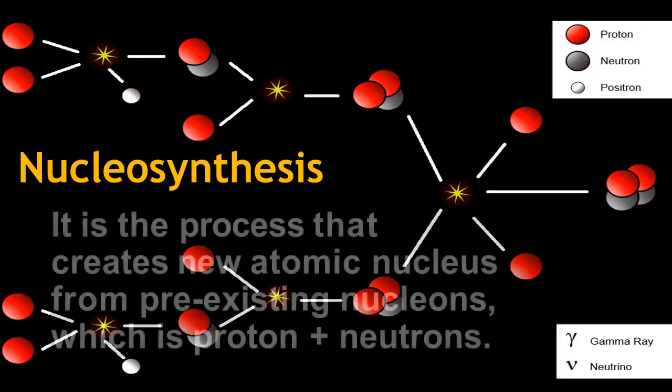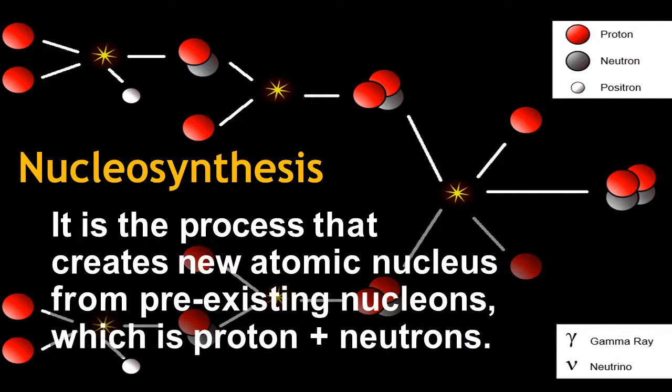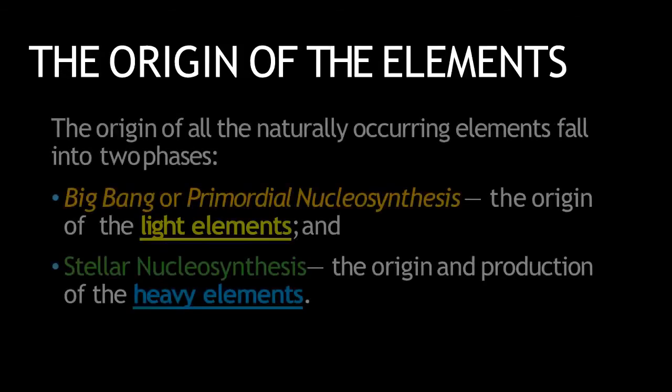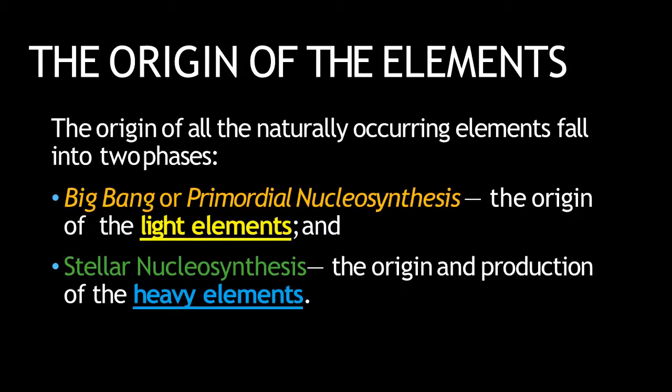Nucleosynthesis is the process that creates new atomic nucleus from pre-existing nucleons, which are from protons plus neutrons. The origin of all the naturally occurring elements fall into two phases: Big Bang or primordial nucleosynthesis, and stellar nucleosynthesis.